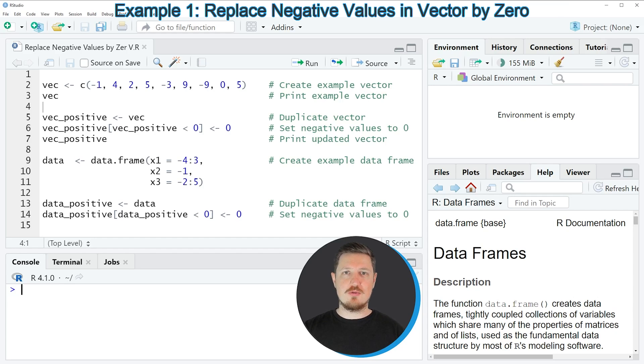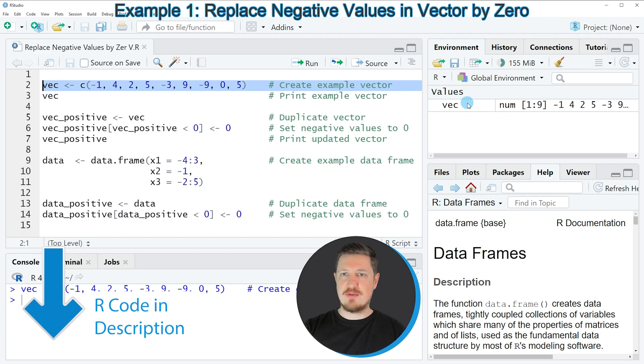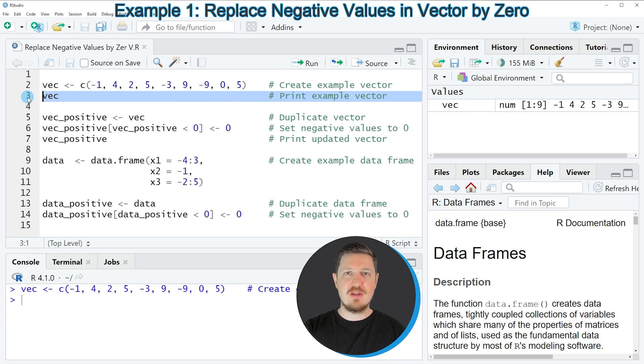In this video I will show you two examples and the first example is based on the vector object that we can create in line 2 of the code. If you run this line of code, you can see at the top right of RStudio that a new vector object has been created, which is called VEC. We can print this vector to the bottom in the RStudio console by running line 3 of the code. After running this line of code you can see that we have created a vector containing 9 elements and some of these elements are negative and other values are positive.